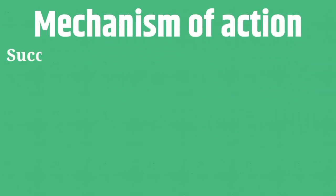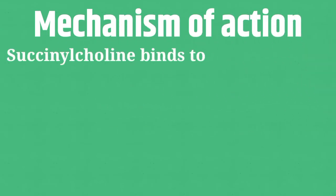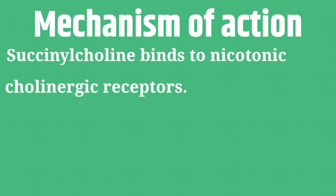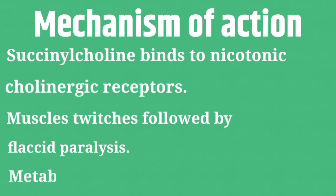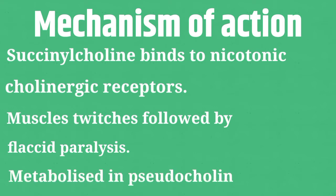Mechanism of Action: Succinylcholine binds to nicotinic cholinergic receptors, manifested by an initial series of muscle twitches followed by flaccid paralysis. It is immediately metabolized by pseudocholinesterase, which is synthesized by the liver, to prevent its accumulation in plasma, and should be given at a faster rate.